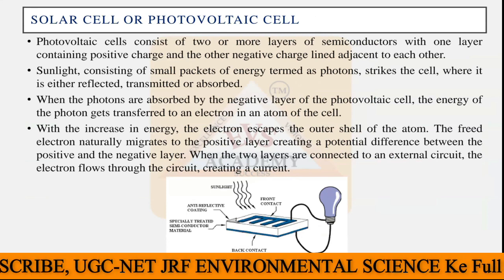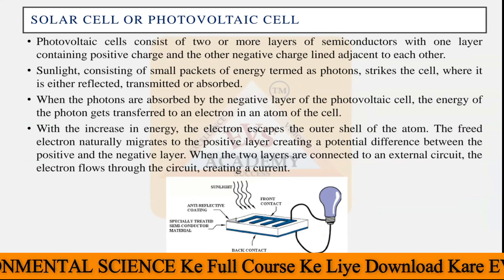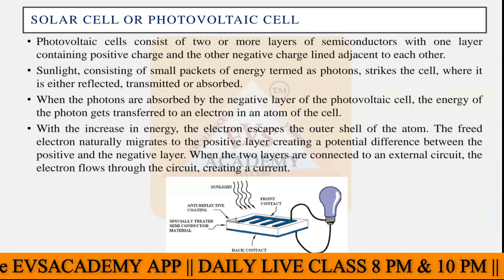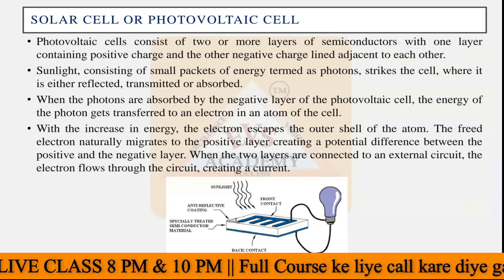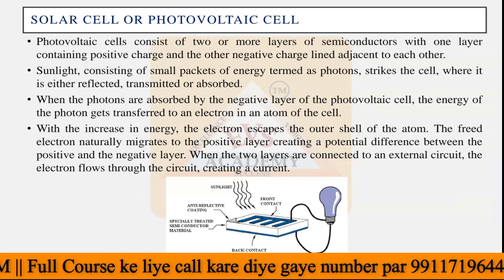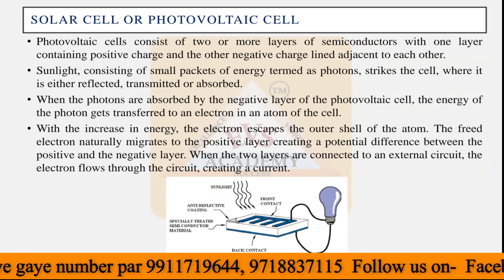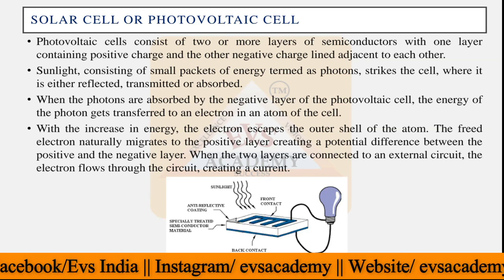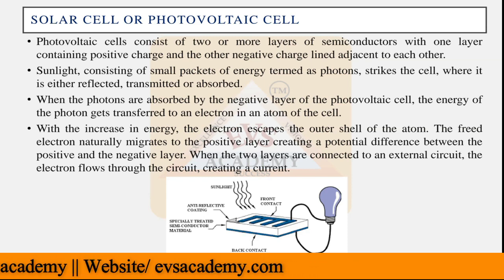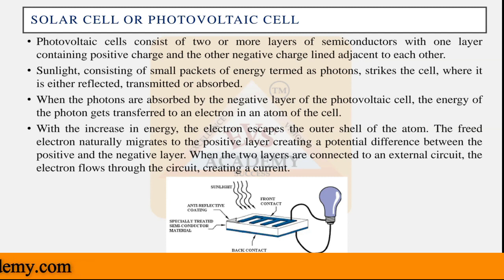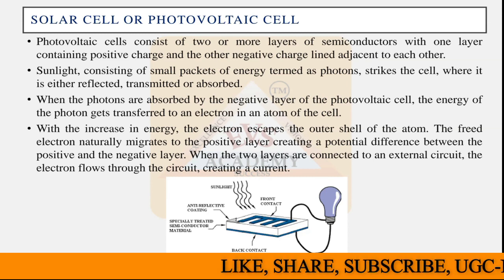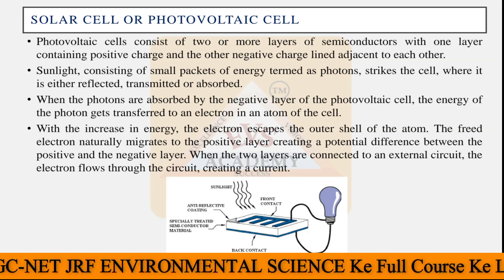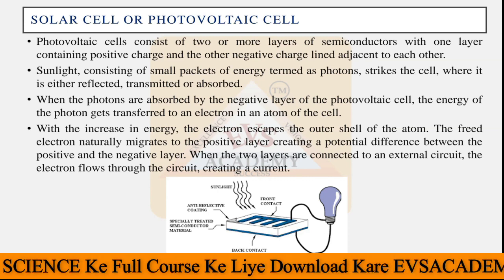The solar cell or photovoltaic cell is very common in use nowadays — for household users, street lights, and industrial energy generation. A very large area covered with solar panels can create electricity. The photovoltaic cell is generally made up of two or more layers of different semiconductors, with one layer containing a positive charge and the other containing a negative charge. You connect these layers with a wire to complete the circuit. Once the movement of electrons from the negative layer to the positive layer begins, and holes move in the opposite direction, you can create electricity.